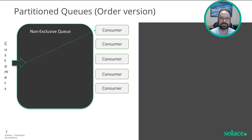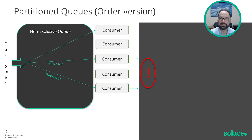And that's a great solution when events are independent, or all state is shared amongst the consumers through a cloud or database. But sometimes the security, cost, or complexity of such a solution is too high. Let's say you can modify orders, and a customer modifies order number 22. With non-exclusive queues, that order could go to any consumer, so the chances are the same consumer will not be the one that handled the initial order. That doesn't work.